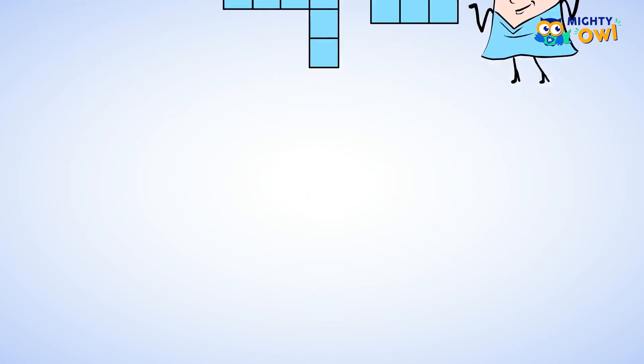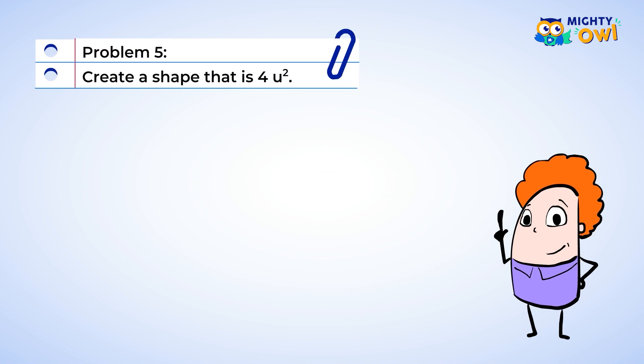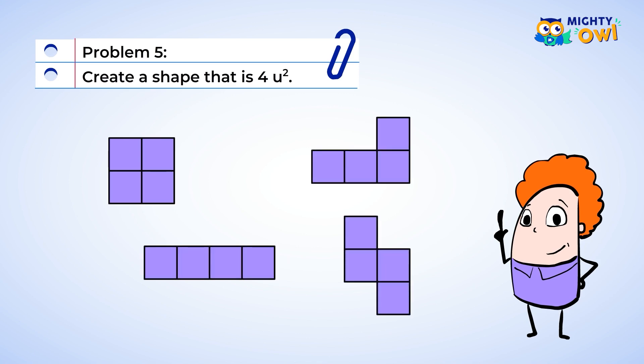That was pretty fun. Let's try with just one more. Problem five: Create a shape that is four square inches. All right. We can start by drawing four squares. Let's put them together. Here are a few examples of how you may have put the unit squares together. How creative.